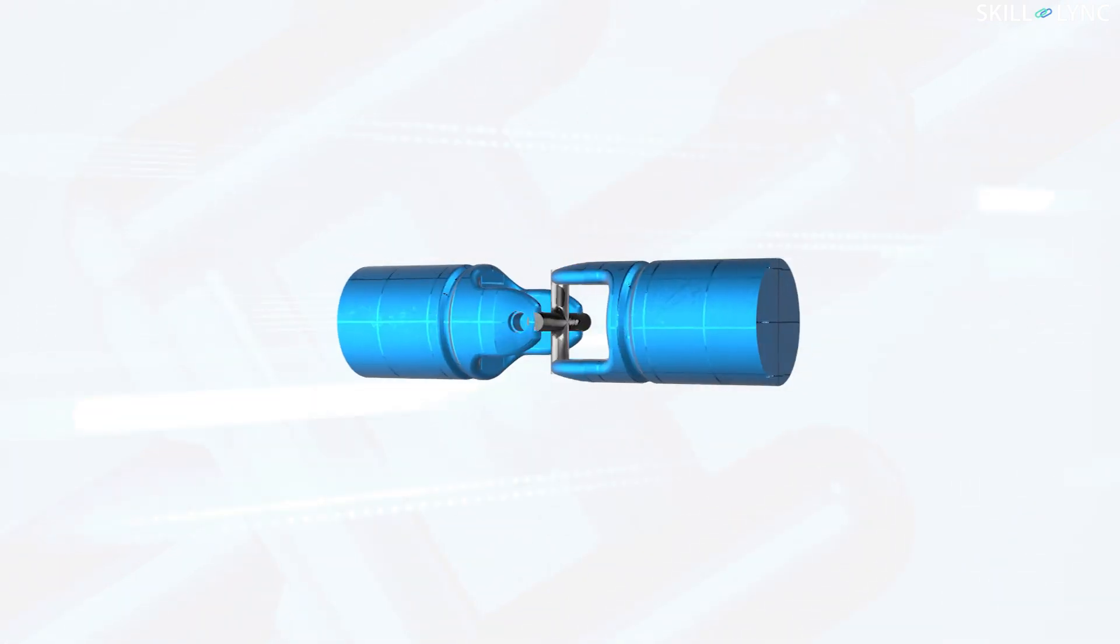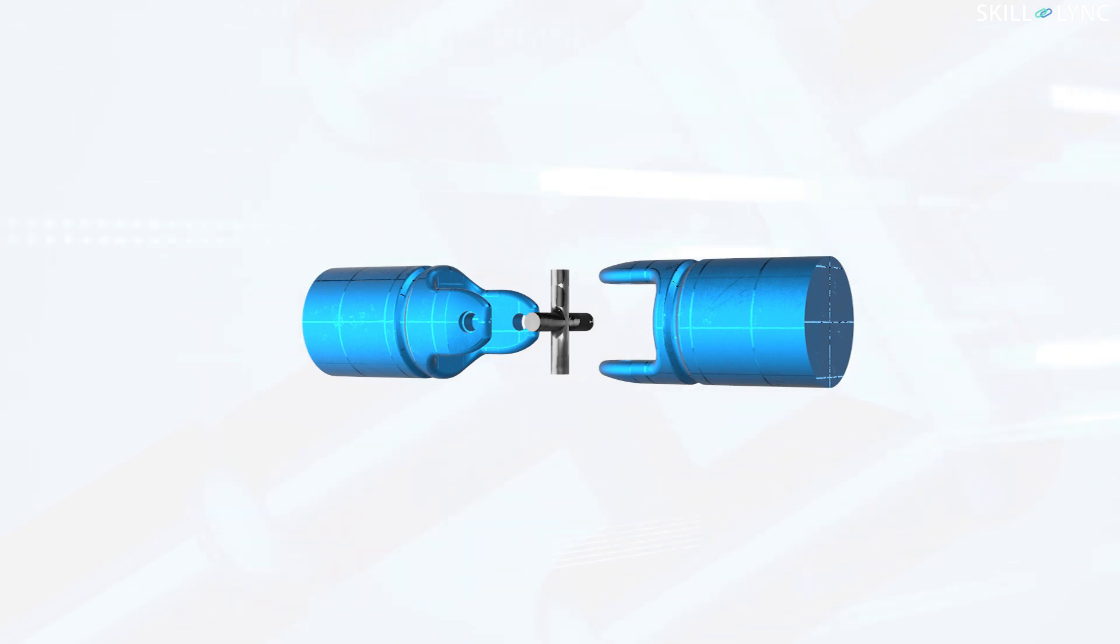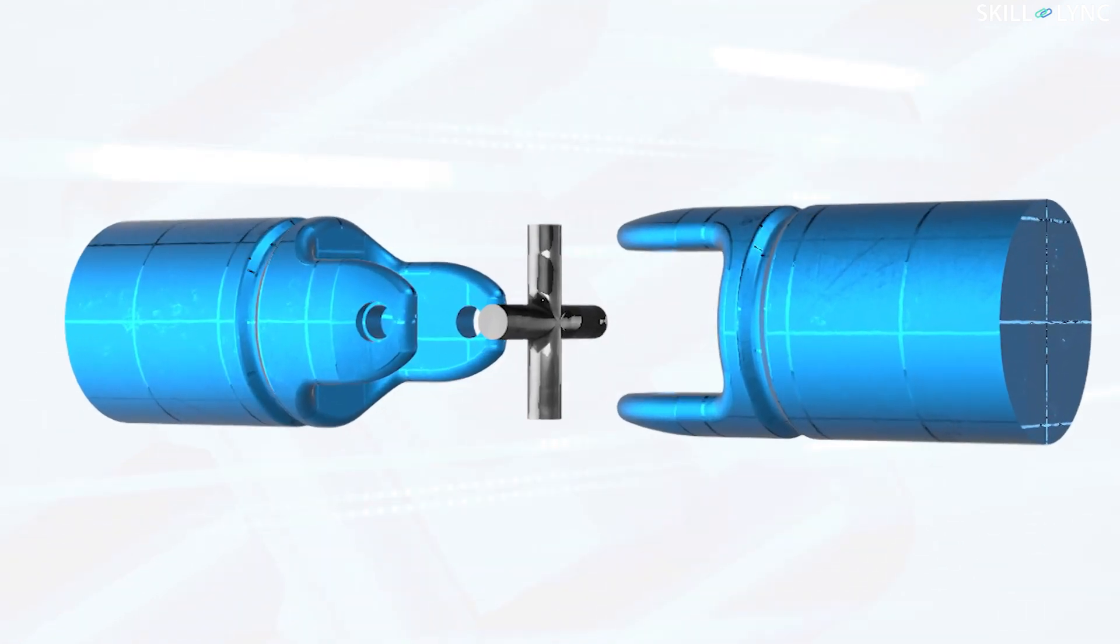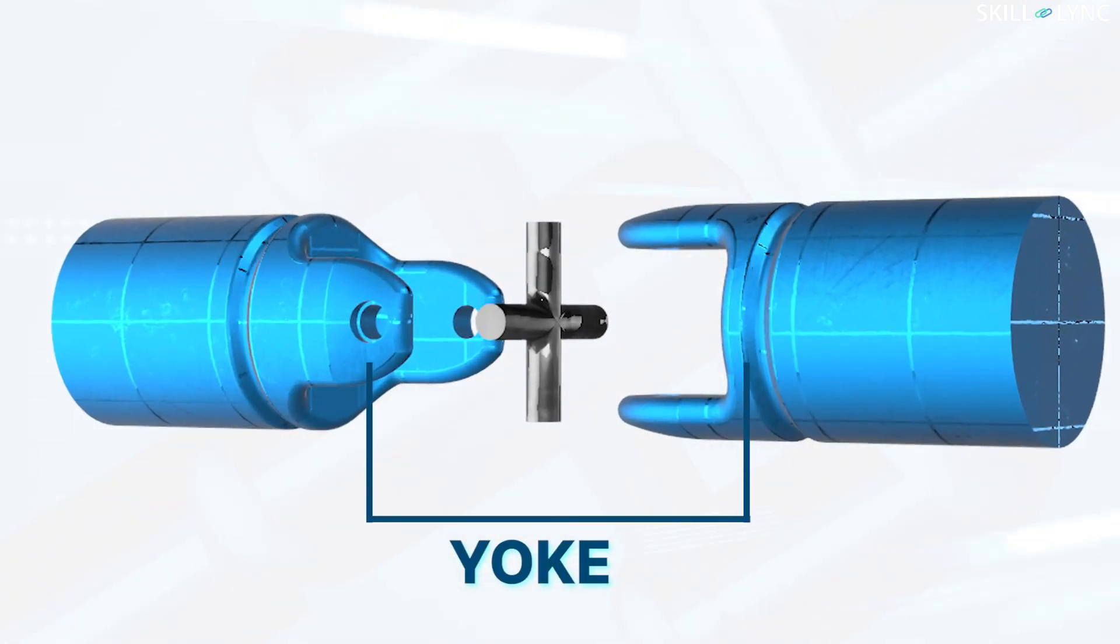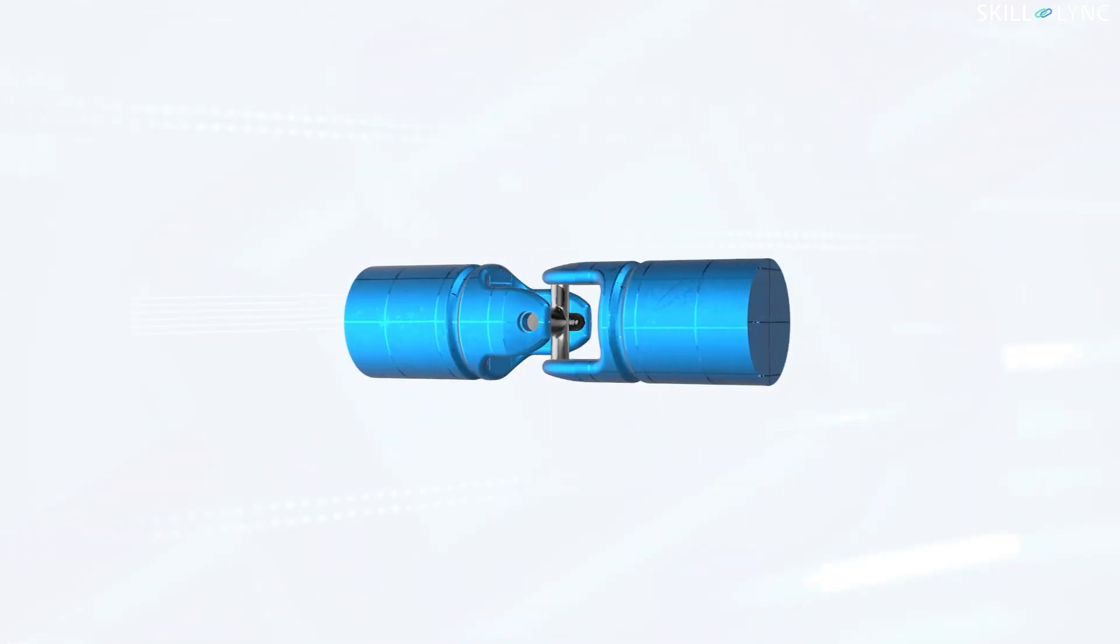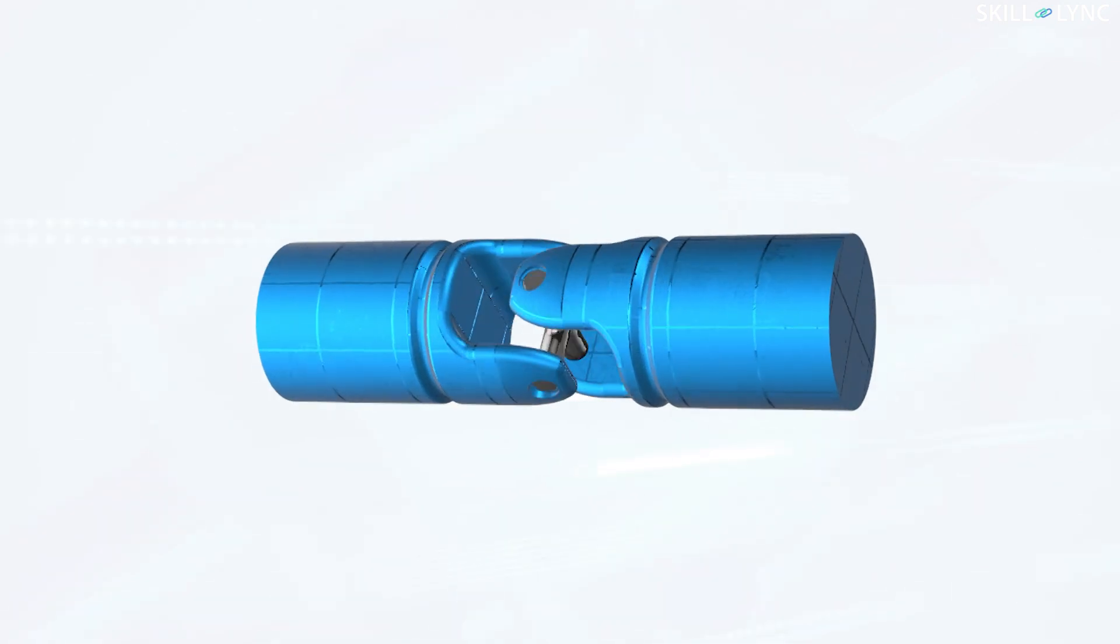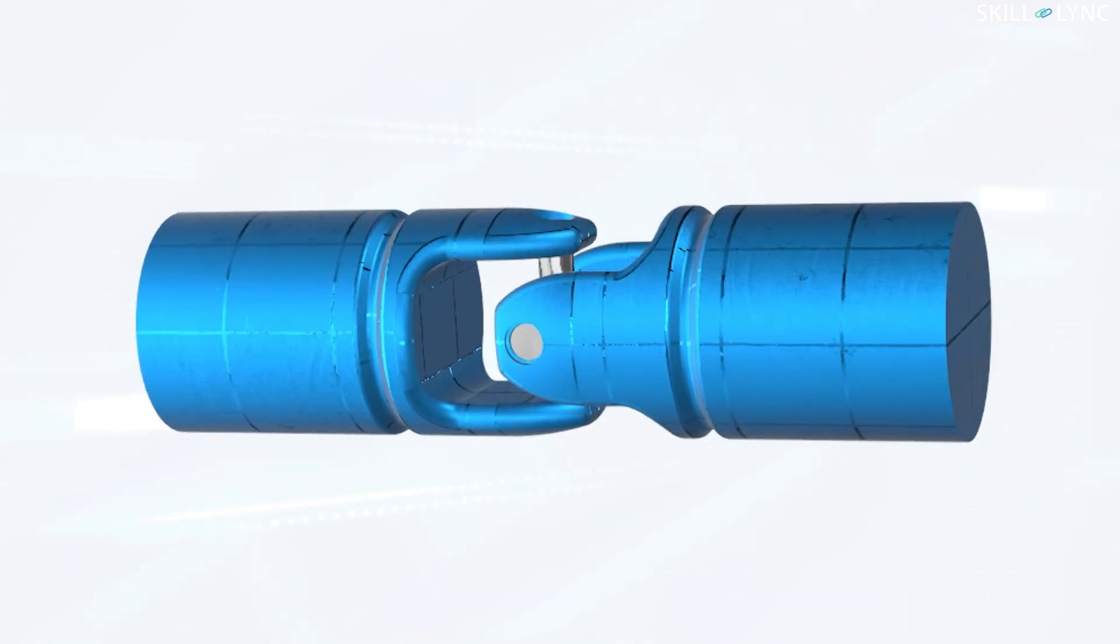Let's dismantle it into individual parts to understand its construction. The Y-shaped parts that you see here are called the yokes, and there is also an intermediate cross member here. The opposite ends of the cross member are connected to the yokes, and the yokes are in turn attached to the shafts.